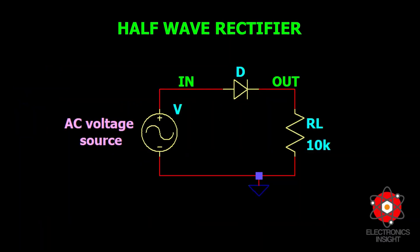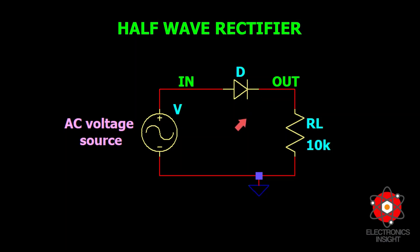A rectifier circuit generally uses a semiconductor PN junction diode. The PN junction diode has a very low resistance in the forward direction and a very high resistance in the reverse direction. In analysis, the resistance in the reverse direction is assumed to be infinite most of the time, and the diode conducts in the direction of the arrowhead. A DC supply is needed for many applications like electroplating and many other electronic circuits.